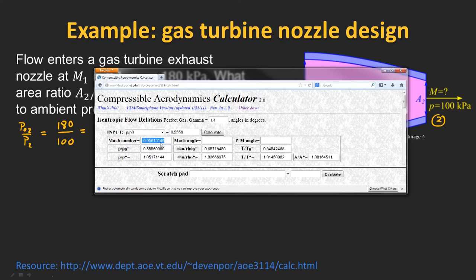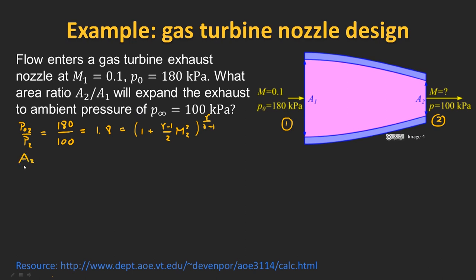The calculator also solves equation 4, giving us the ratio between the exit area and the critical area A*. So A2/A* is 1.0016. But this raises an interesting question — we don't actually achieve sonic flow anywhere in this nozzle, meaning there's no physical area where we reach Mach 1. This isn't a problem: we can always hypothetically extend our nozzle to the point where we would reach sonic flow. This is a virtual throat — the area we would need to contract to in order to reach Mach 1 — but it doesn't matter that we don't actually do this in our physical nozzle.